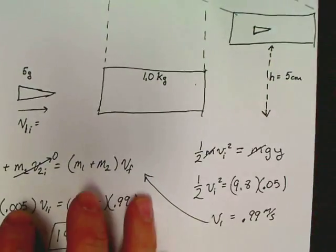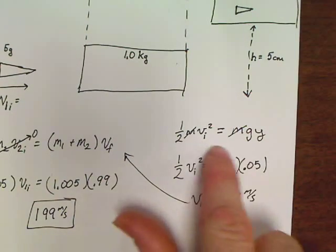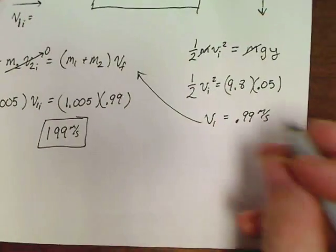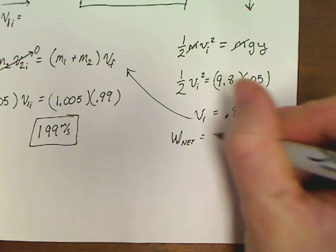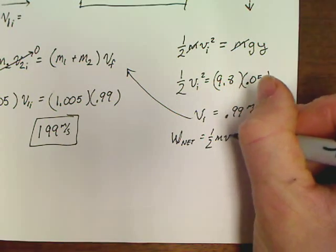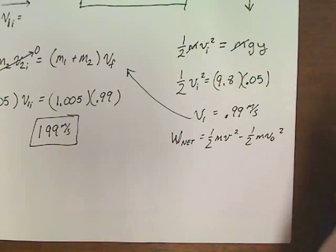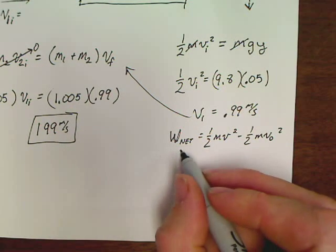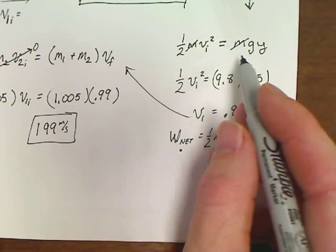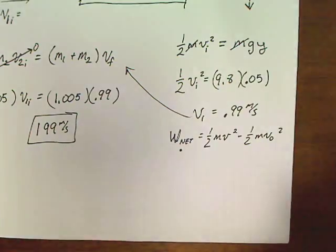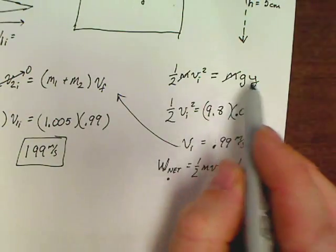The other way of working it would have been to have done a work net over here and have said, okay, work net equals 1.5 MV square minus 1.5 MVO square. And then you could have done work done by gravity, M-G-Y initial, and all that. But you would still came right back out to the whole 1.5 MV square, M-G-Y. So this was literally the easiest and quickest way of doing it.